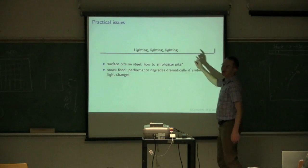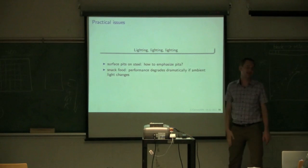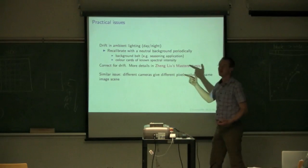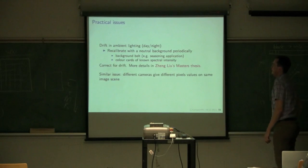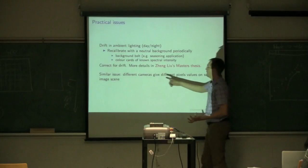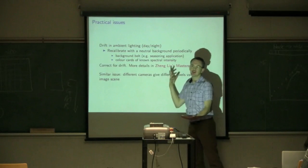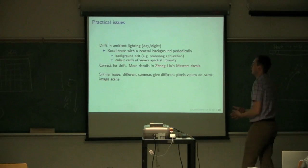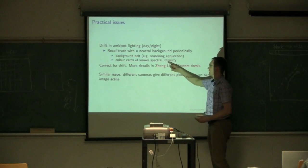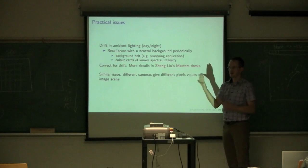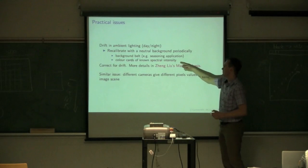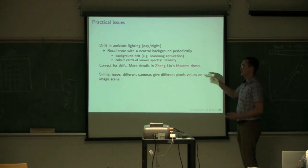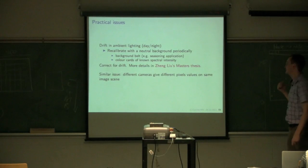I've spent so much time with cheap companies that refuse to spend money on lighting and then you have to try and fix up the lighting in an algorithm. It's tough. The other problem is, even if you get the lighting right, there will be extra lighting from the sunlight coming in or ambient lighting in the room that changes. So you have to recalibrate periodically. So some ideas you can use is, you can put a background belt in there where you know what that background should be. And you can recalibrate periodically. Or another thing that's often used is they have color cards of known spectral intensity.